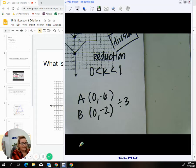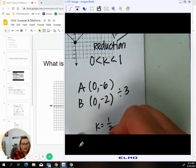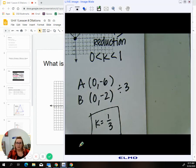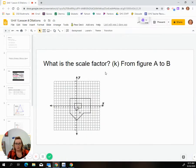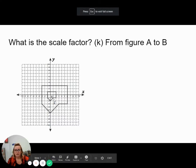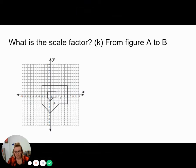So dividing by three is the same as one-third. So that tells us that this scale factor is one-third. The scale factor for this problem to go from the A figure to the B figure is K is equal to one-third.